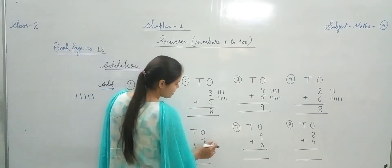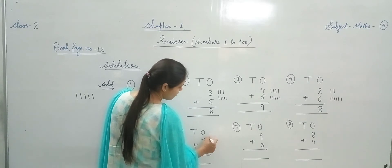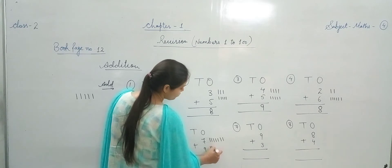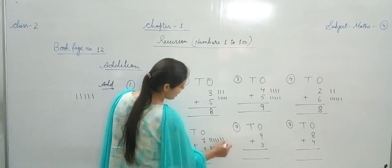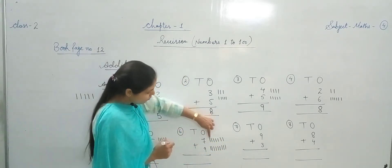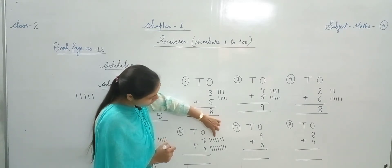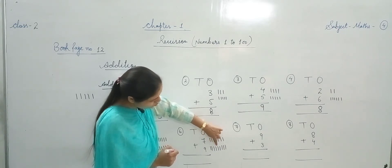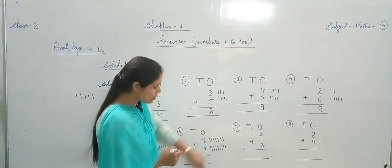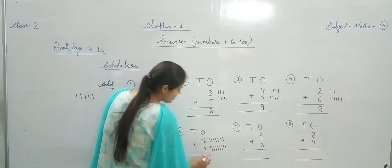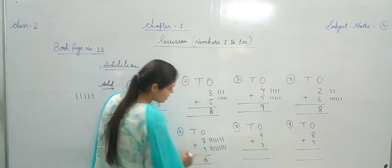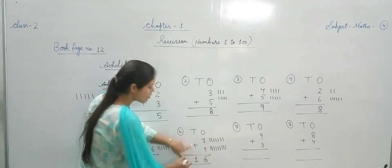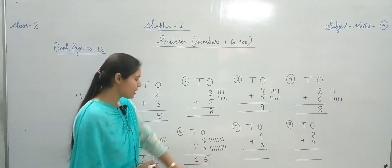Next — 7 plus 9. 7 lines draw करते हैं, फिर 9 lines. Count कीजिए — 1, 2, 3, 4, 5, 6, 7, 8, 9, 10, 11, 12, 13, 14, 15, 16. We got the answer: 16. 16 में भी 2 digits हैं — 6 को Ones column में लिखा, और 16 का 1 Tens column में लिखना है। एक ही box में नहीं लिखना है।